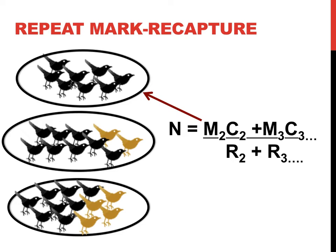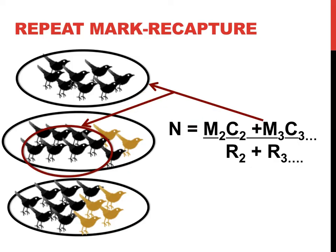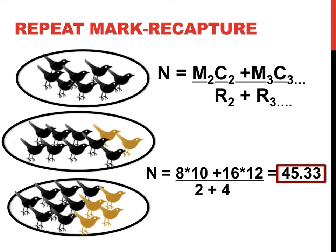M2, therefore, would be the total number of individuals that were marked at the beginning of round 2. All of the individuals in round 1 were marked, so there should be a total of 8 individuals marked at the beginning of round 2. M3 is the trickiest number to calculate, but might be made a bit easier by this illustration. M3 would indicate the total number of individuals that are marked at the beginning of the third round. This would include all the individuals that were marked in the first round, and all of the new individuals that were marked in the second round. Note, this does not include the two marked, or yellow birds, in the second round — they were already counted as marked in the first round. If you take the 8 birds that were marked in the first round, plus the 8 new birds that were marked in the second round, your value for M3 should be 16. Plugging in all these numbers, you could estimate the size of this population of birds to be around 45.